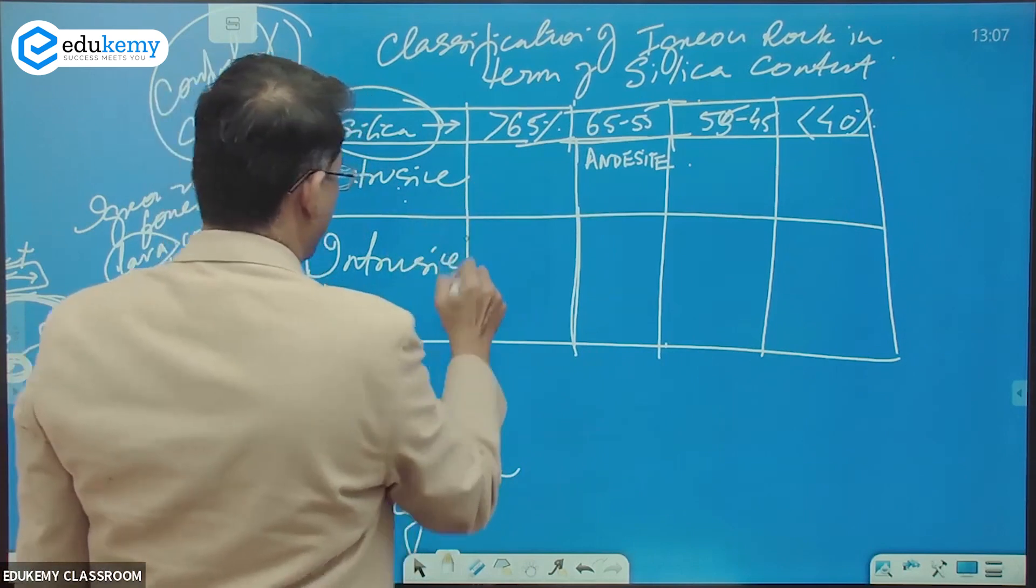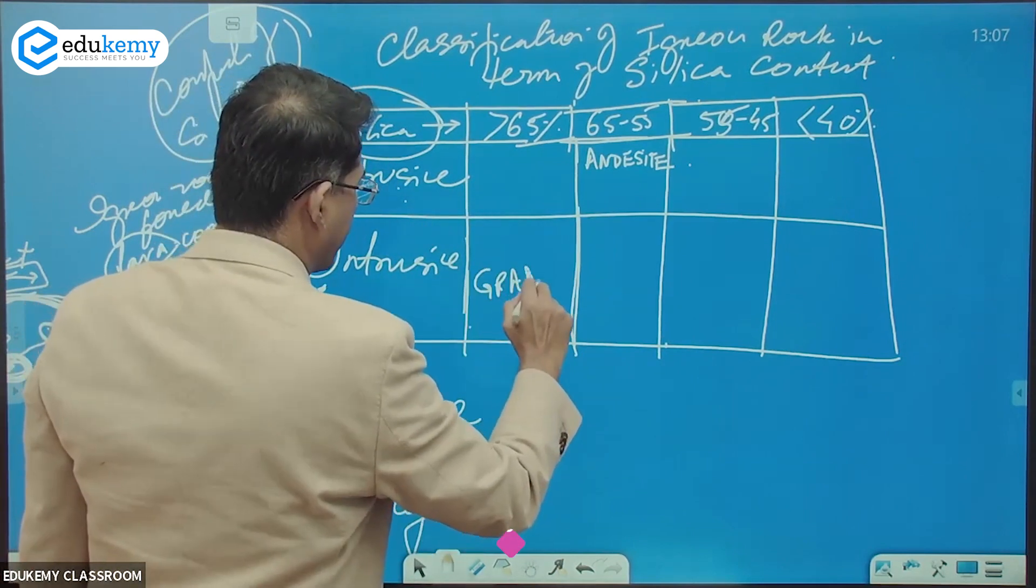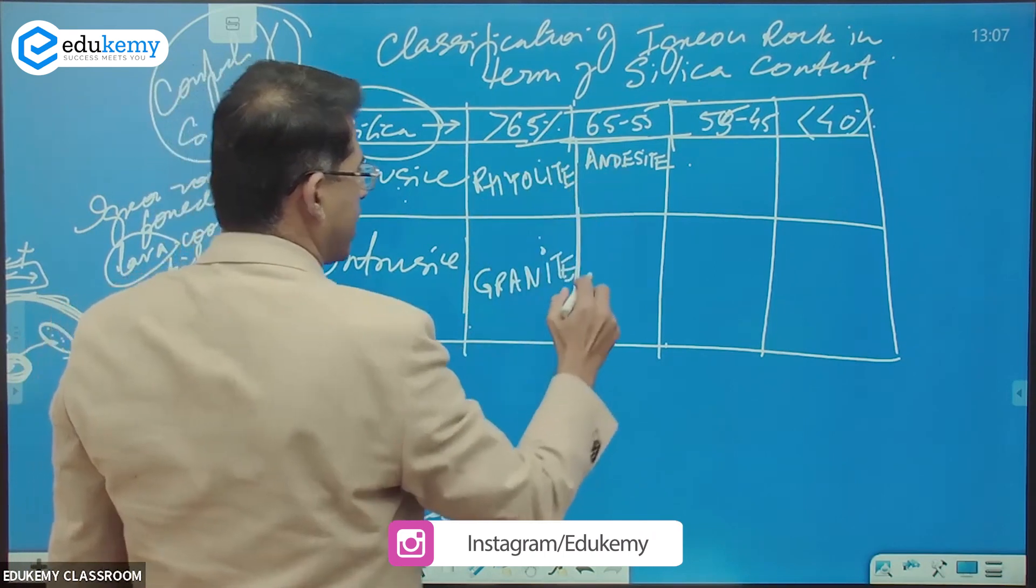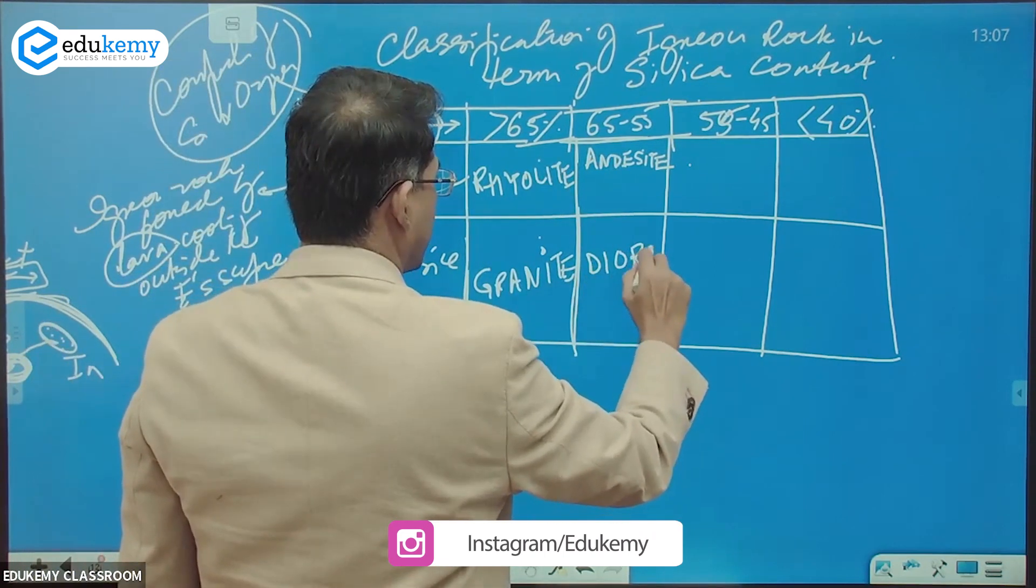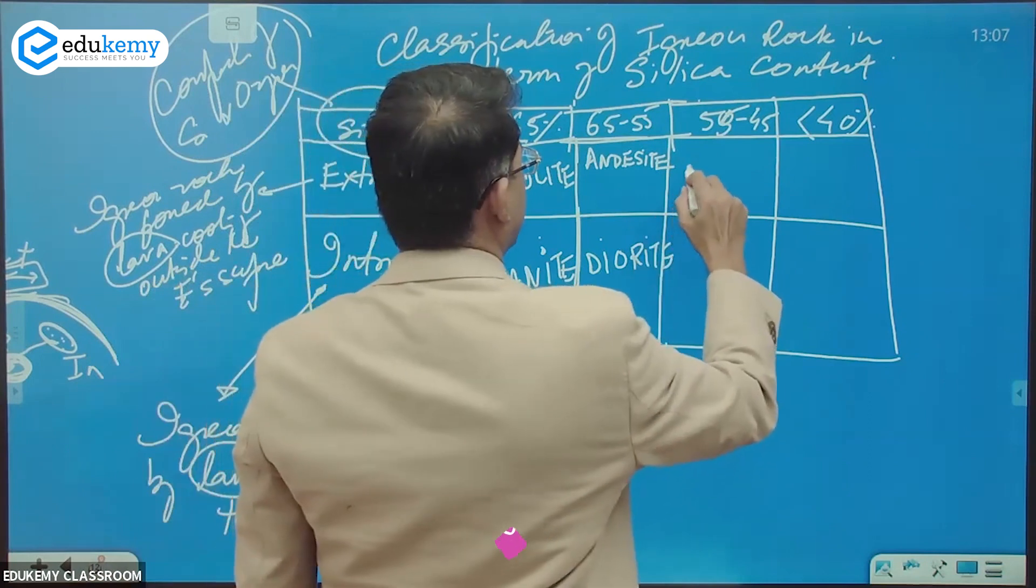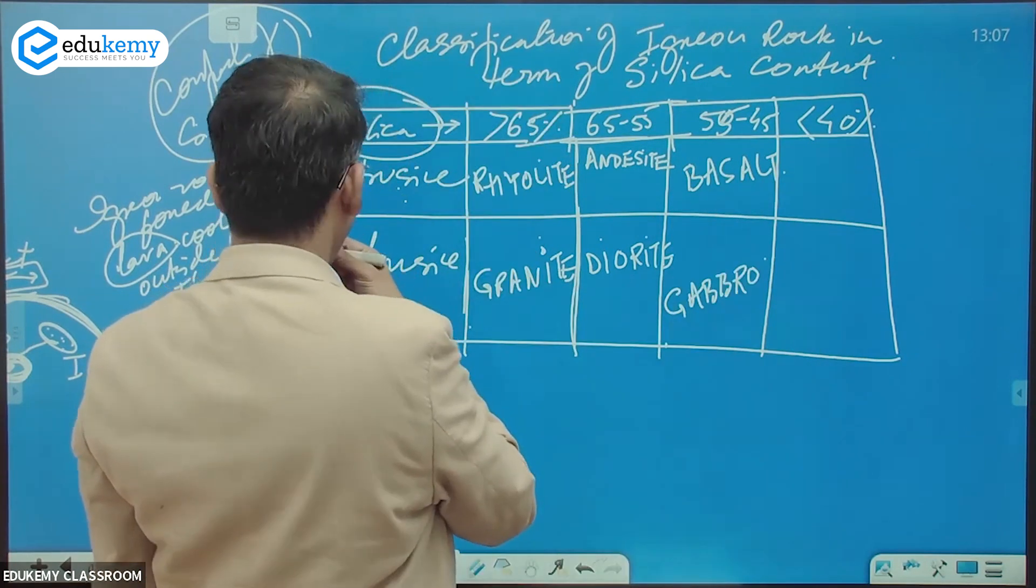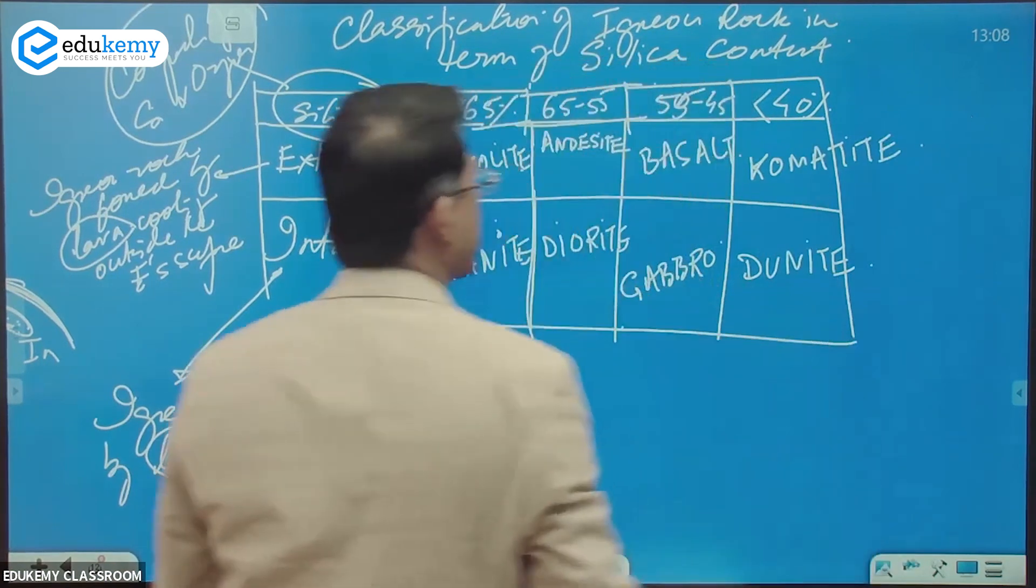So granite is here. This is rhyolite. Andesite. This is diorite. This is basalt. This is gabbro. Intrusive one. This is comatite.